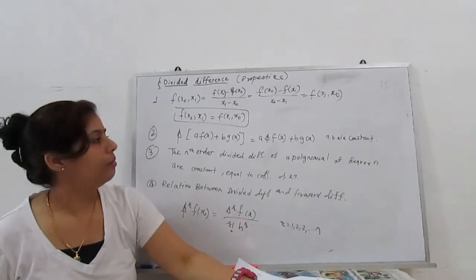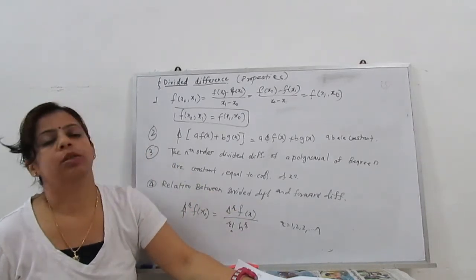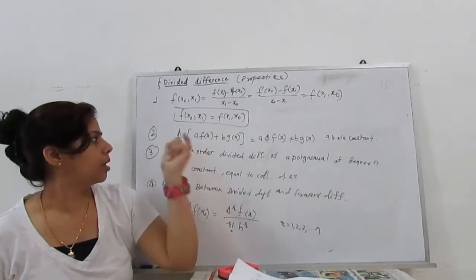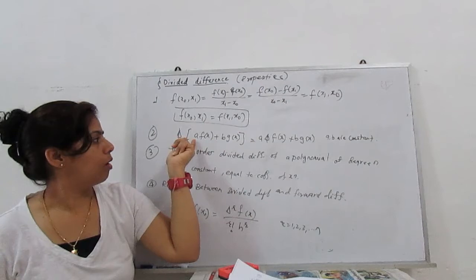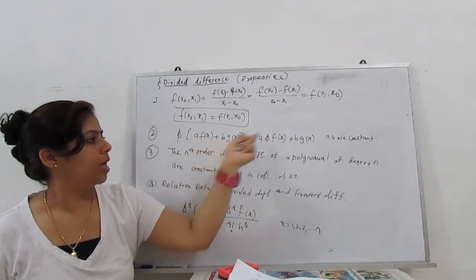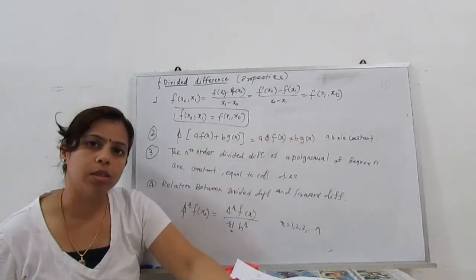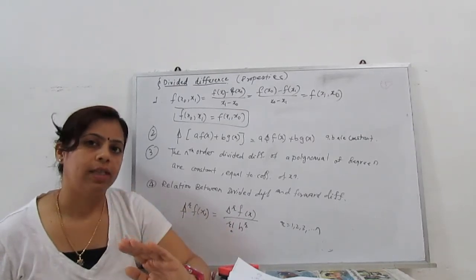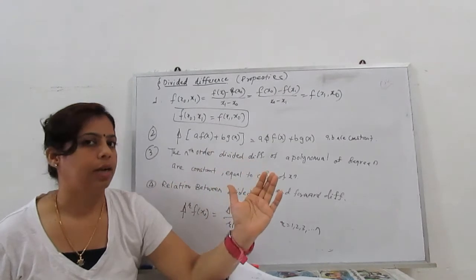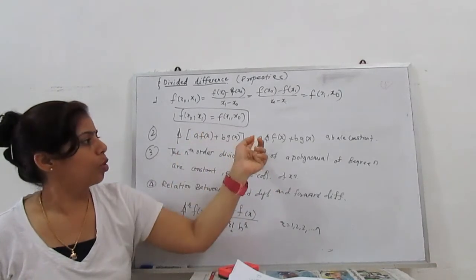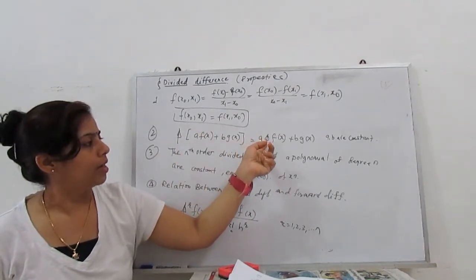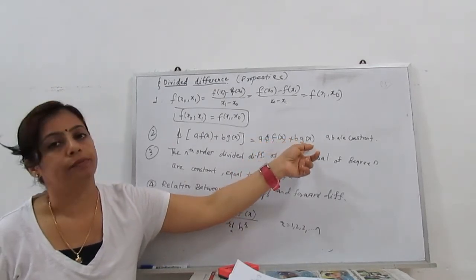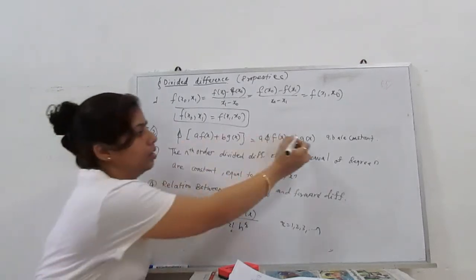The second property: if there is a constant multiplication, the divided difference of A·f(x) + B·g(x), where A and B are constants, equals A times the divided difference of f(x) plus B times the divided difference of g(x). Constants can be factored out.